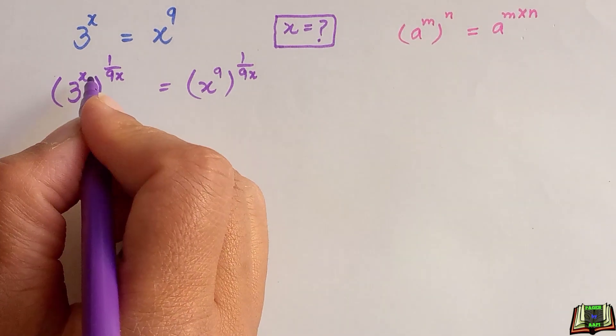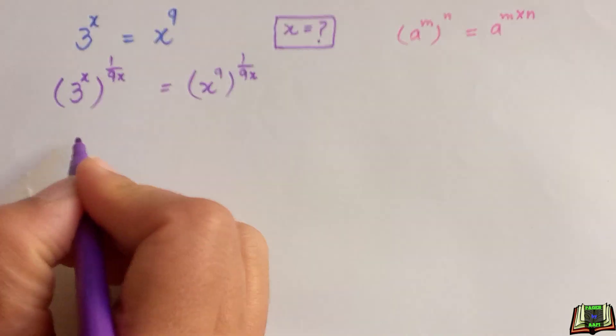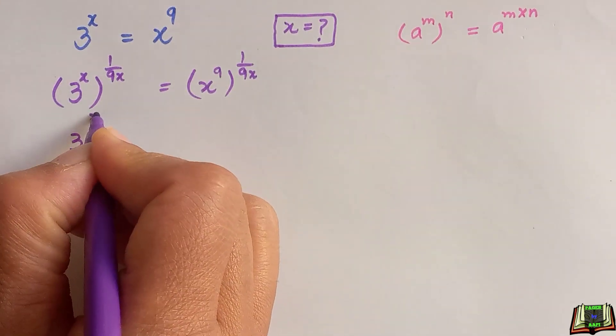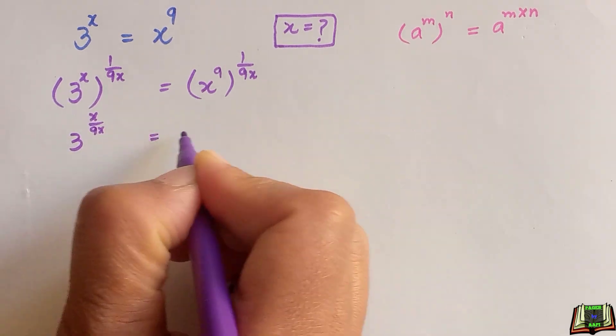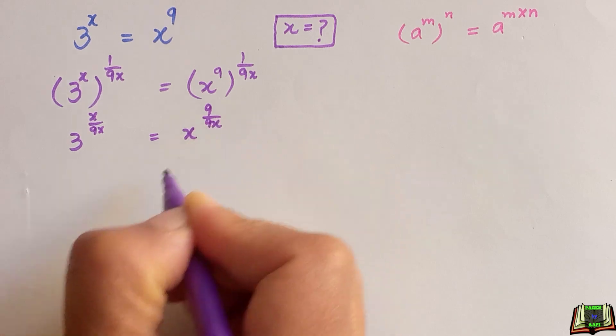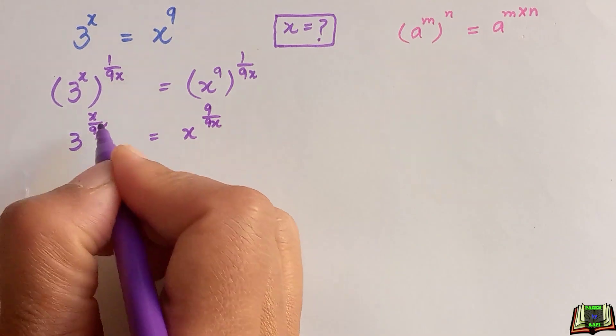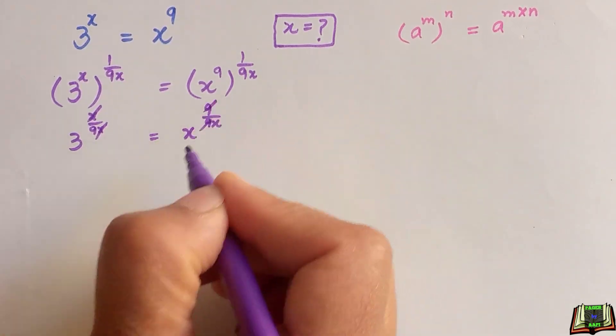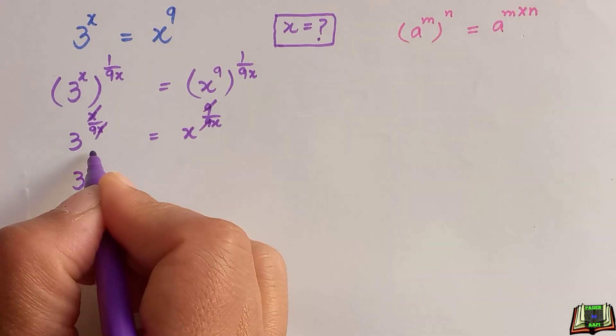So we will multiply these two and these two: 3 raised to power x over 9x is equal to x raised to power 9 over 9x. Here x and x cancel out, 9 and 9 cancel out. We have 3 raised to power 1 over 9 and x raised to power 1 over x.